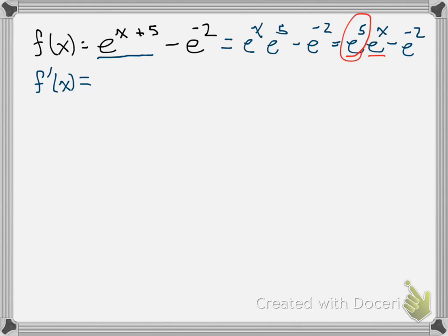Well, the derivative we know of e to the x is our basic one. It's e to the x, so the derivative here is e to the fifth times e to the x.